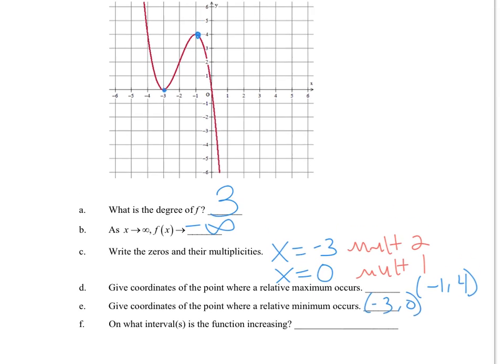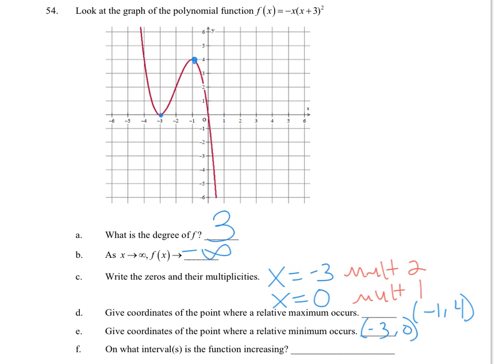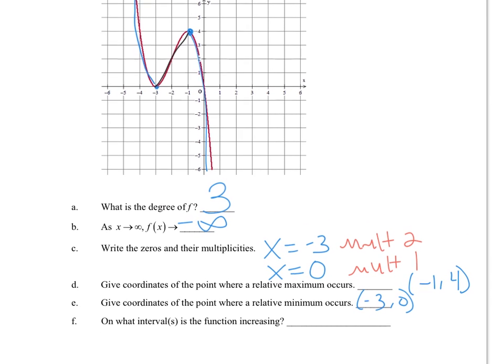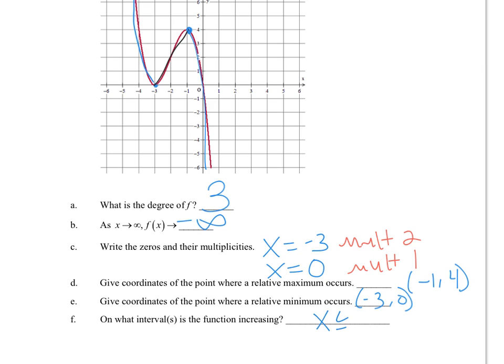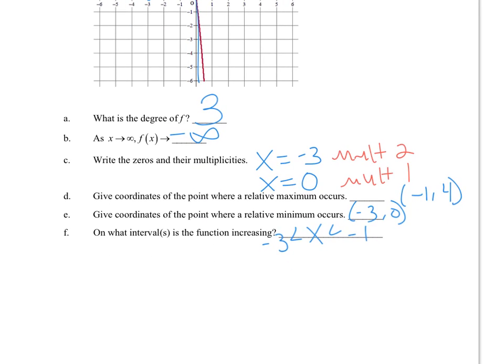When is the function increasing? For increasing and decreasing, you always have to read left to right. So this is decreasing, increasing, decreasing. It's increasing for every x between -3 to -1 as an interval. You can also do the bracket interval notation, and that also means from -3 to -1.